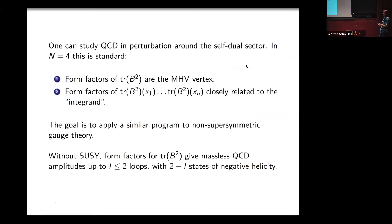This was a popular thing to do around 2005. If I just insert one copy of trace B squared, this is what people would call the MHV vertex. If I insert many copies, you can try to glue them together at tree level by the CSW rules. What I want to do is to apply a similar program, but to non-supersymmetric theories at loop level.